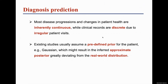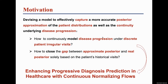Moreover, existing studies usually assume a predefined prior for the patient, such as Gaussian, which might result in the inferred approximate posterior greatly deviating from the real-world distribution. Therefore, it is important to devise an ideal model to effectively capture a more accurate posterior approximation of the patient distribution, as well as the continuity underlying disease progression.